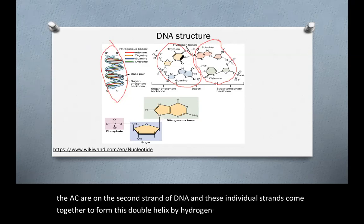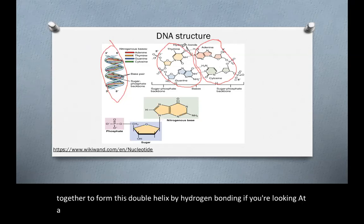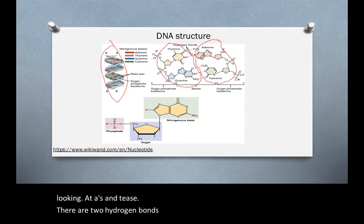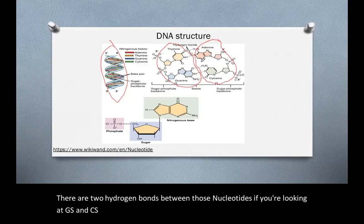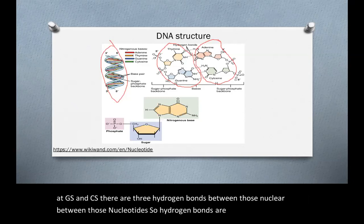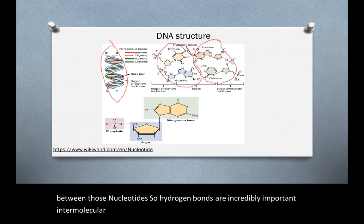If you're looking at A's and T's, there are two hydrogen bonds between those nucleotides. If you're looking at G's and C's, there are three hydrogen bonds between those nucleotides. So hydrogen bonds are incredibly important intermolecular interaction in nucleic acids.